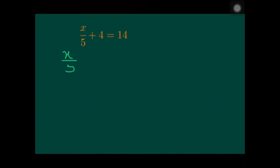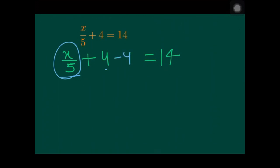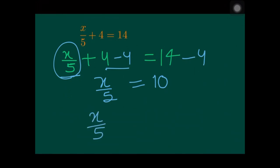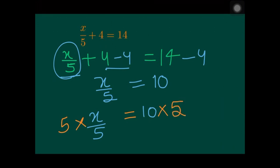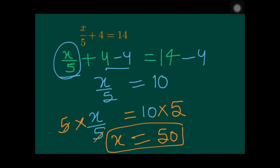Let's take another example: x divided by 5 plus 4 equals 14. Leave the term with x and subtract 4 from both sides. The left side becomes x divided by 5, and the right side becomes 14 minus 4, which is 10. Now x is divided by 5, so we multiply both sides by 5. The 5s cancel on the left, giving x equals 50. That is the answer.